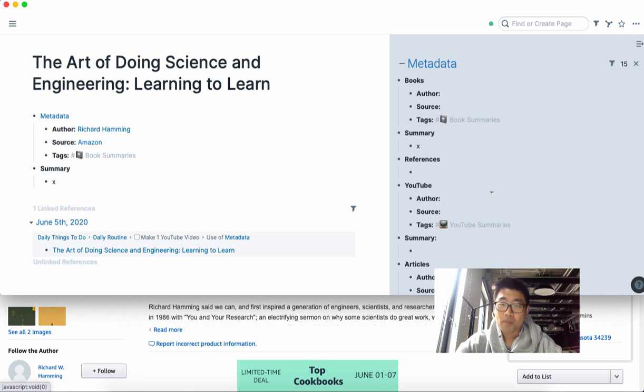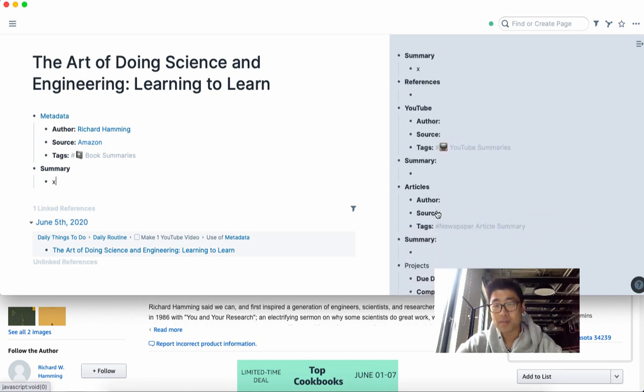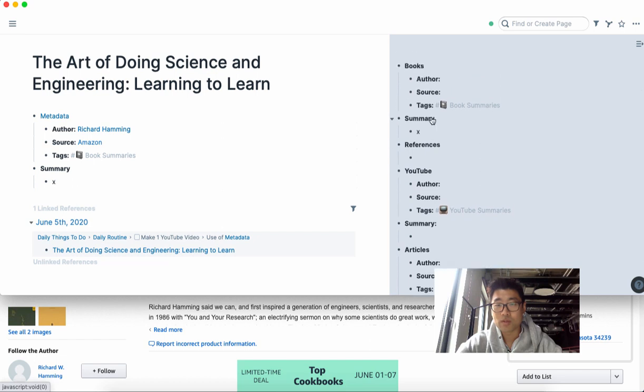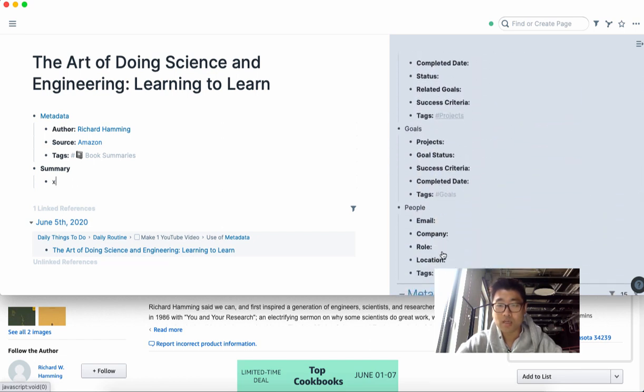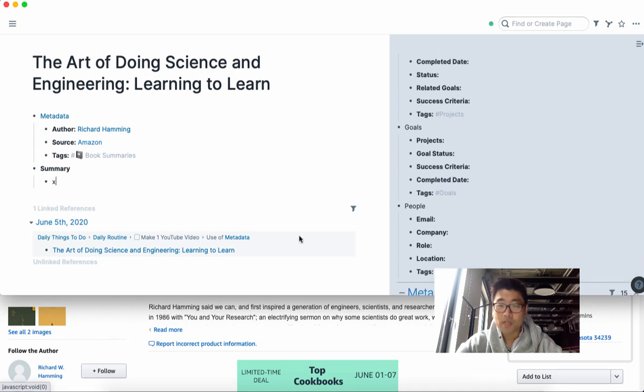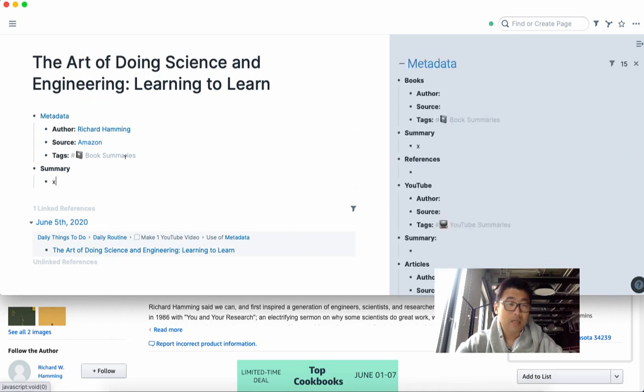So you'll see here that I've got a bunch of categories - one's for YouTube, another one's for books, articles, projects, goals, and people - and I find that this is very useful to have.